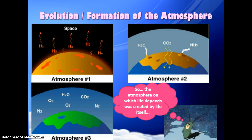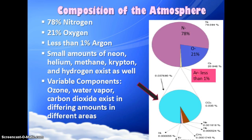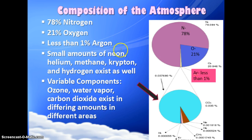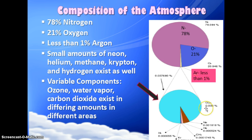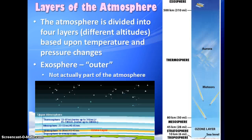The atmosphere that life depends on was actually created by living things — those photosynthetic bacteria. Today the atmosphere is 78% N2 nitrogen gas, 21% O2 oxygen gas, less than 1% argon, and then very small amounts of other gases. CO2 actually makes up only three one-hundredths of a percent — a very small amount — yet even in tiny amounts, greenhouse gases can make a big difference.